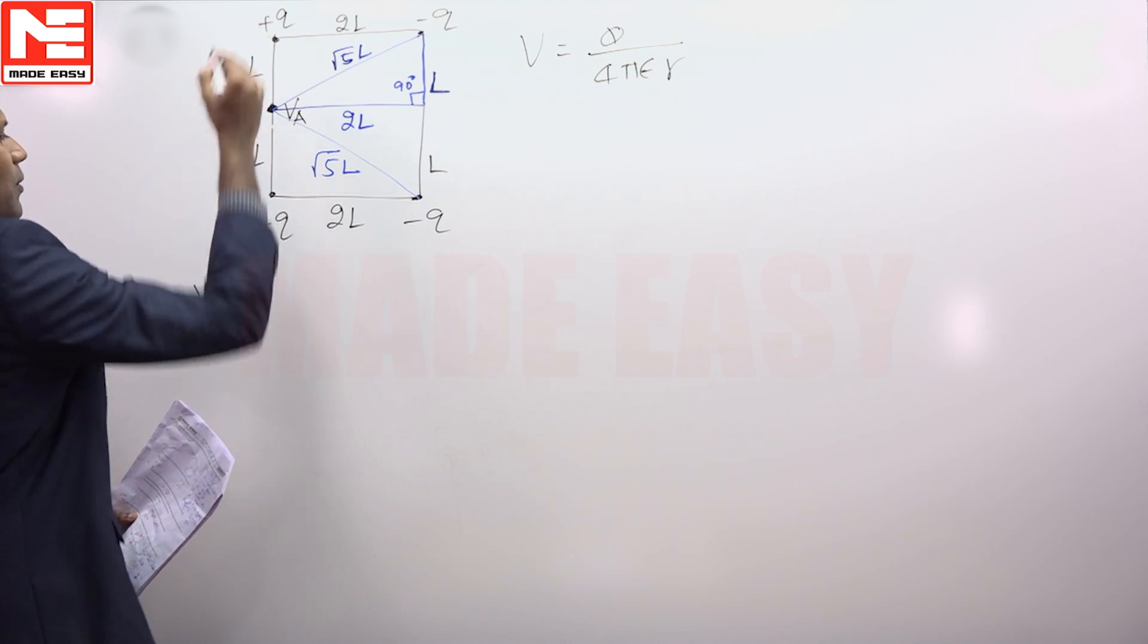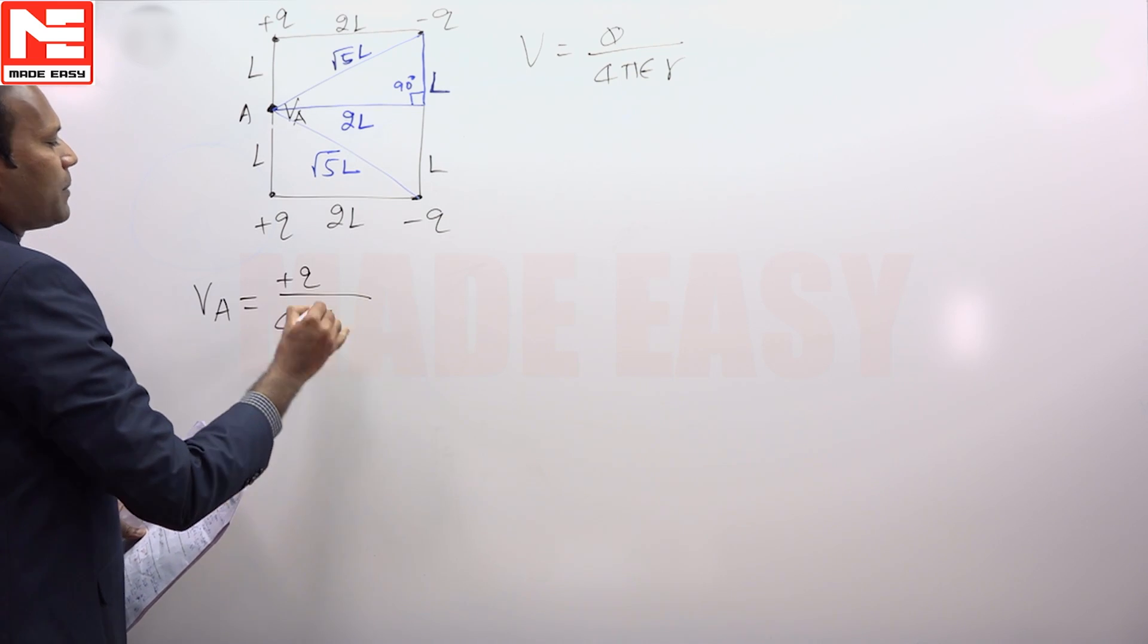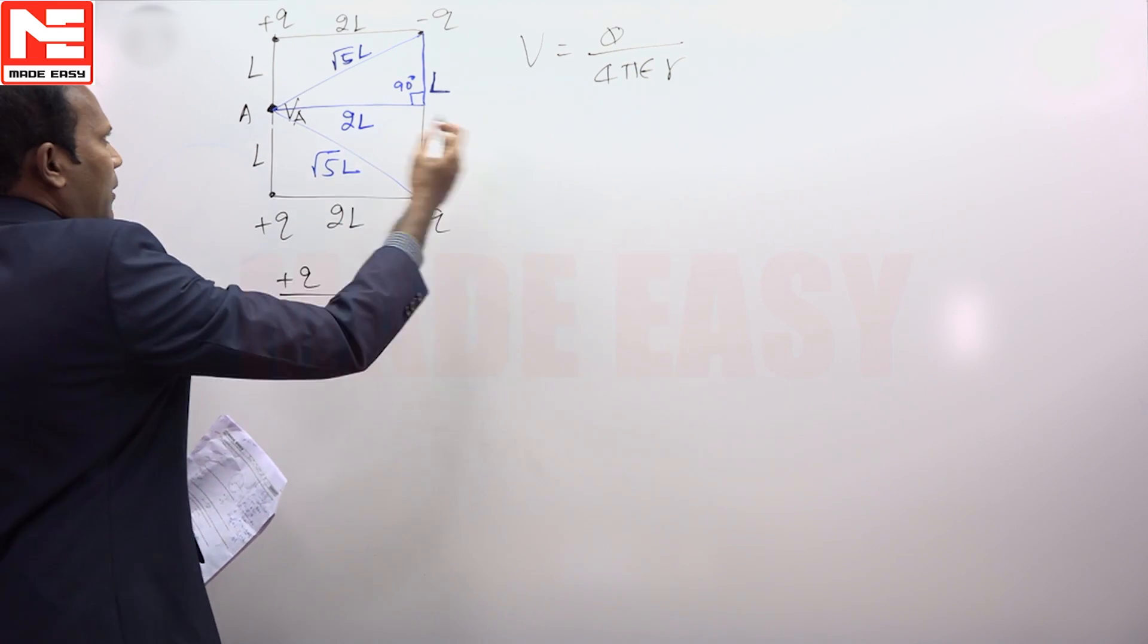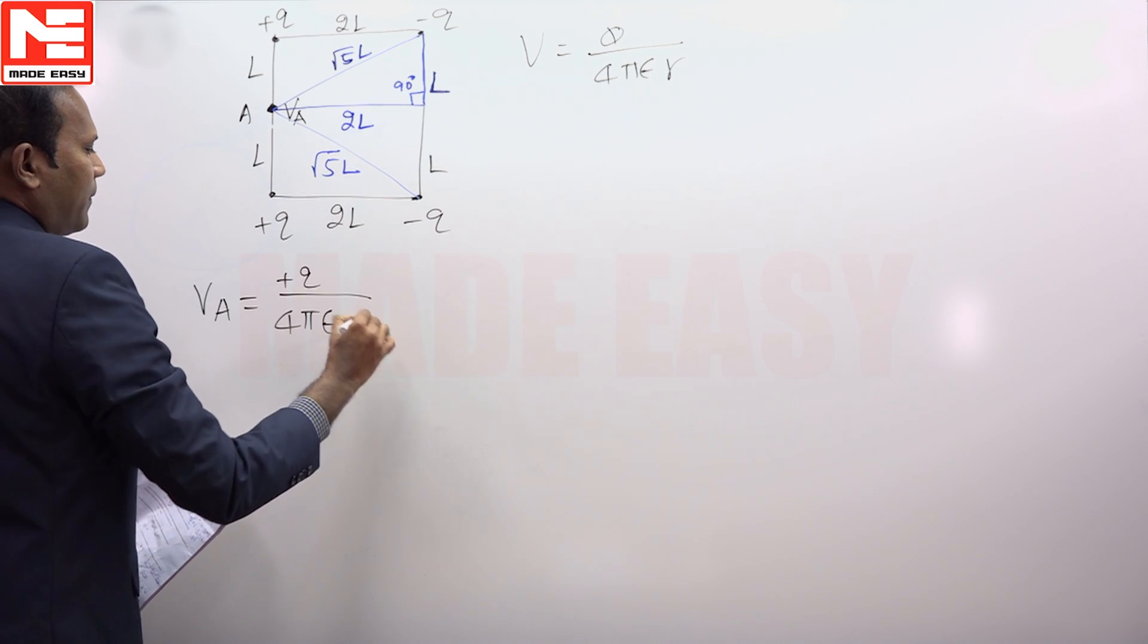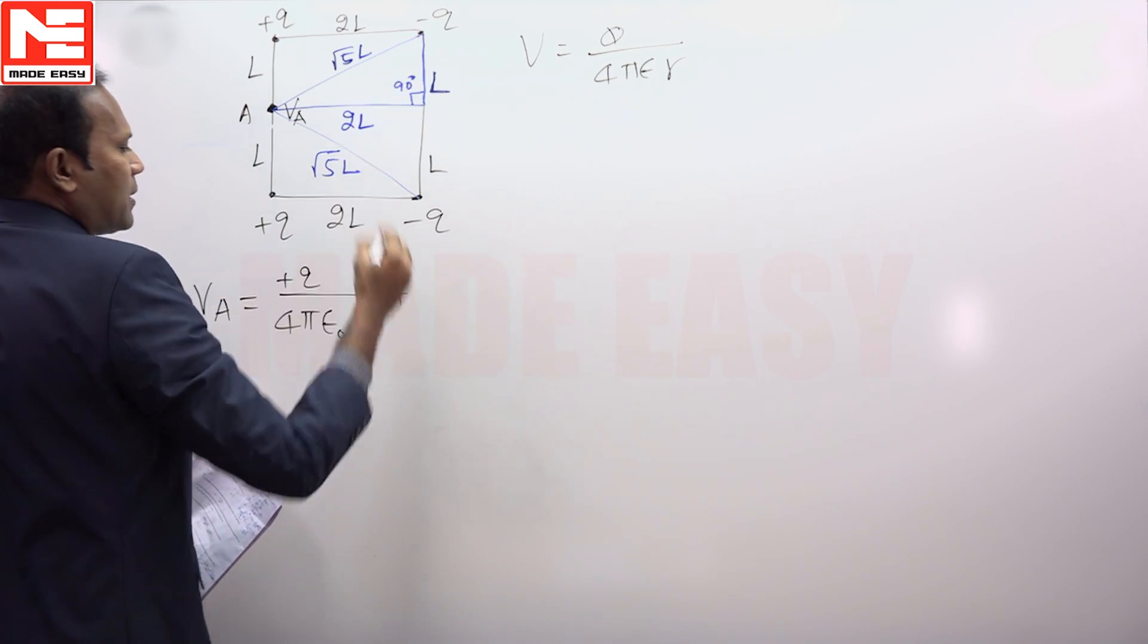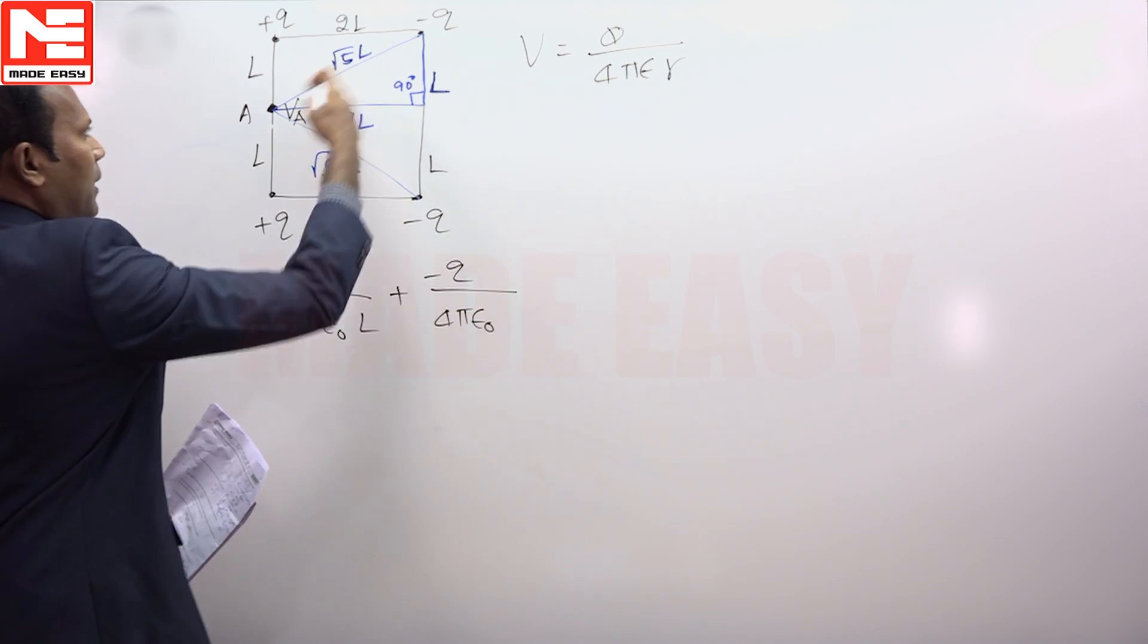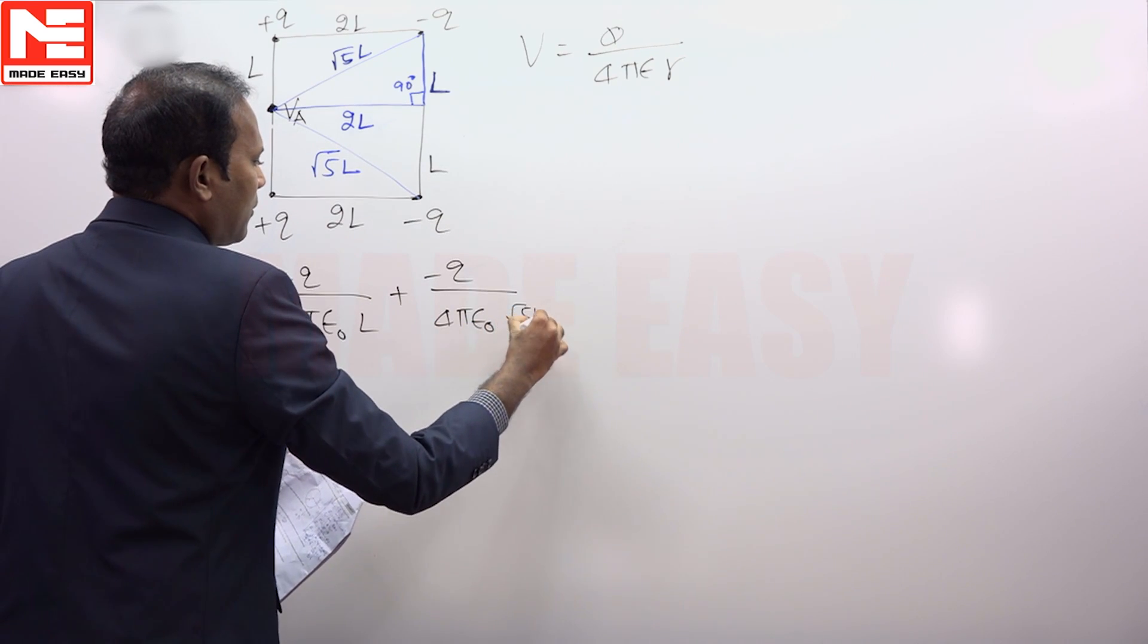Potential at this location due to this charge plus Q: Q/4πε₀ times distance from here to here is L. Potential at this location due to this charge is -Q/4πε₀, here distance is root 5L.